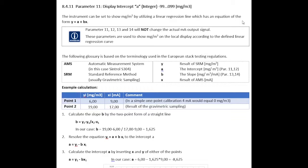Typically, you are using here a linear regression line, which has the equation of y is a plus bx. Parameters A and B need to be set. Just to be sure — whatever you set here, it will not change the range or anything on the milliamp output signal. It just correlates the display to show milligram per cubic meter.